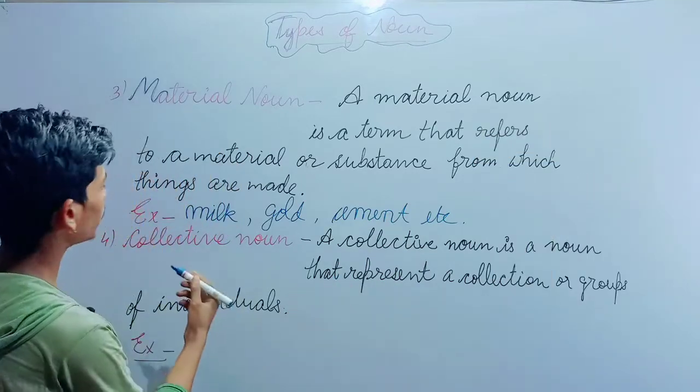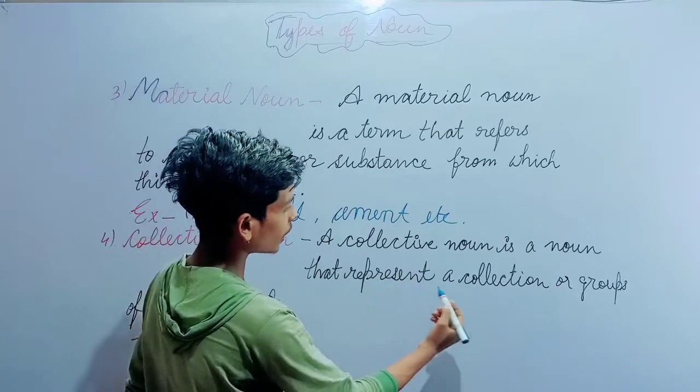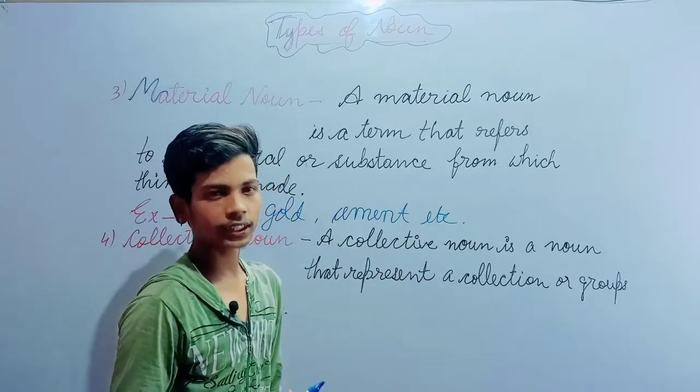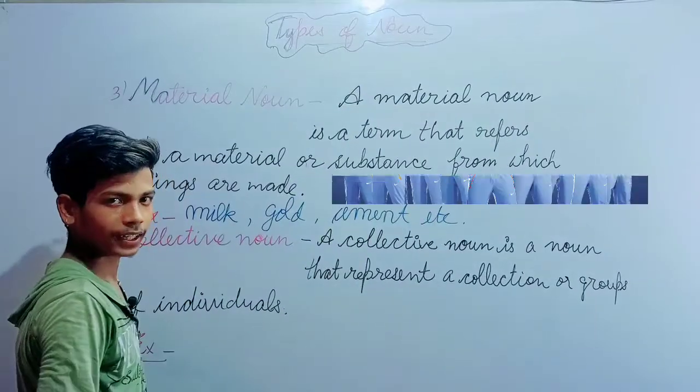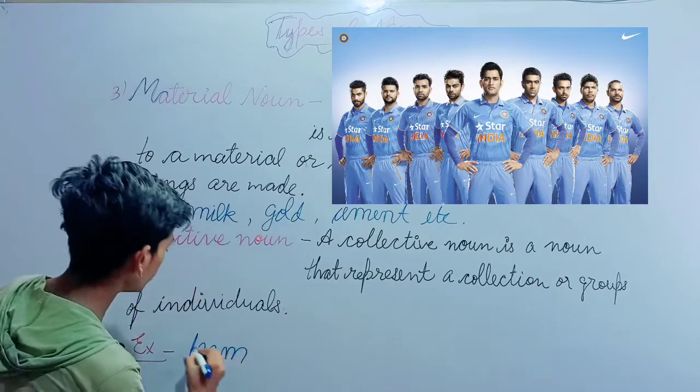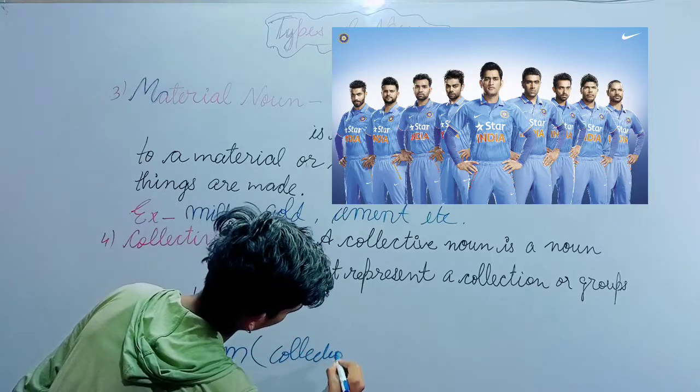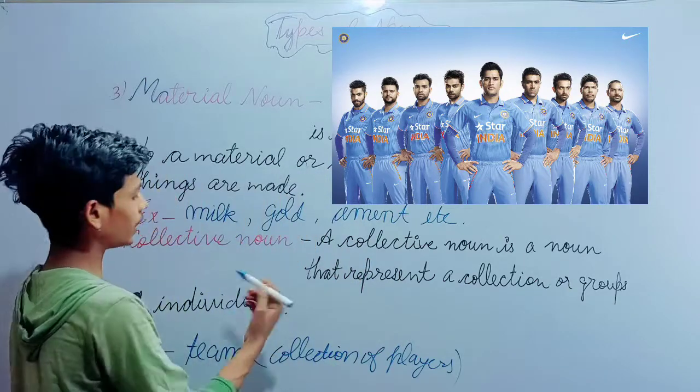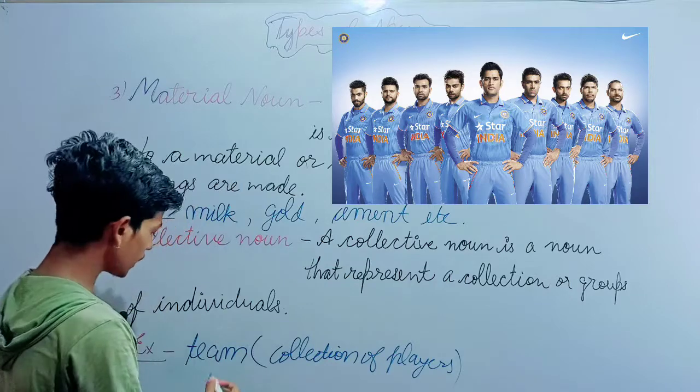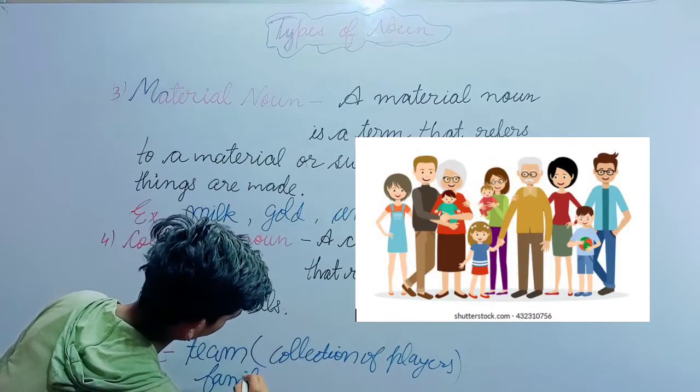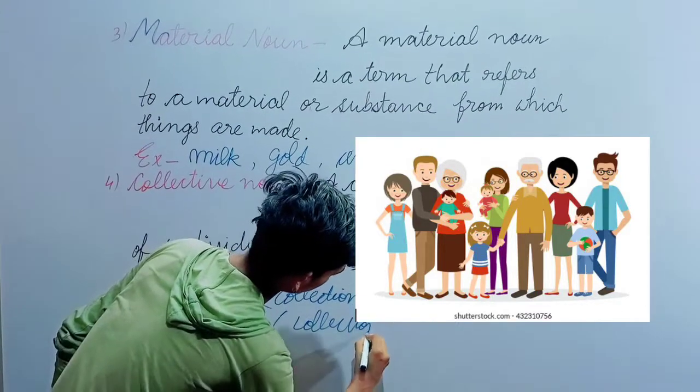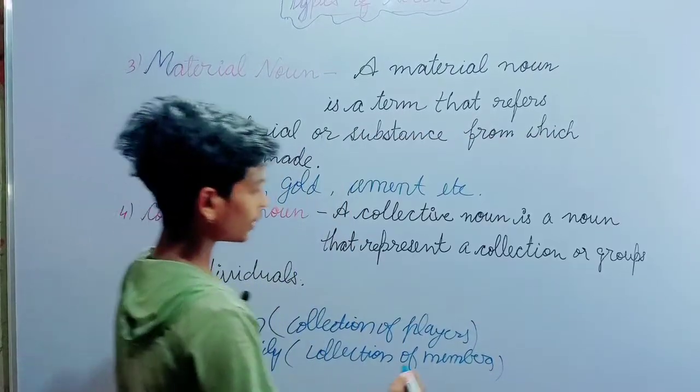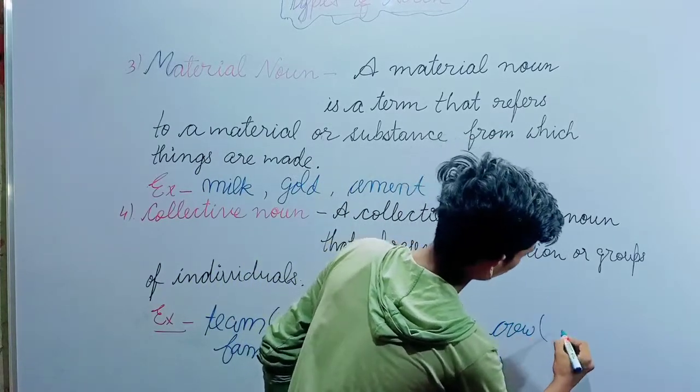The fourth type is collective noun. A collective noun is a noun that represents a collection or group of individuals. Examples include: a team of players, a family (a collection of members), and a group of sailors.